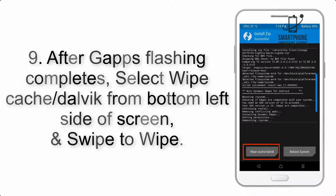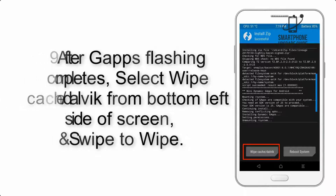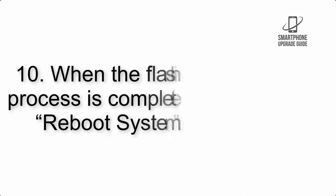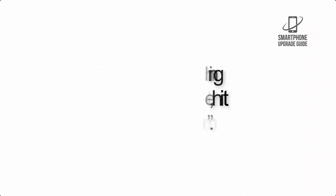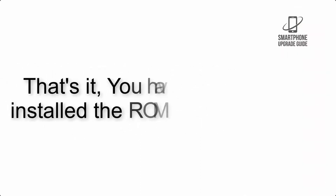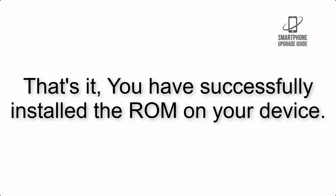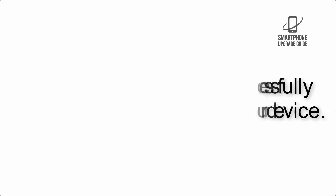Step 9: After GApps flashing completes, select Wipe Cache and Dalvik from the bottom left side of the screen and swipe to wipe. Step 10: When the flashing process is complete, hit Reboot System. That's it — you have successfully installed the ROM on your device.